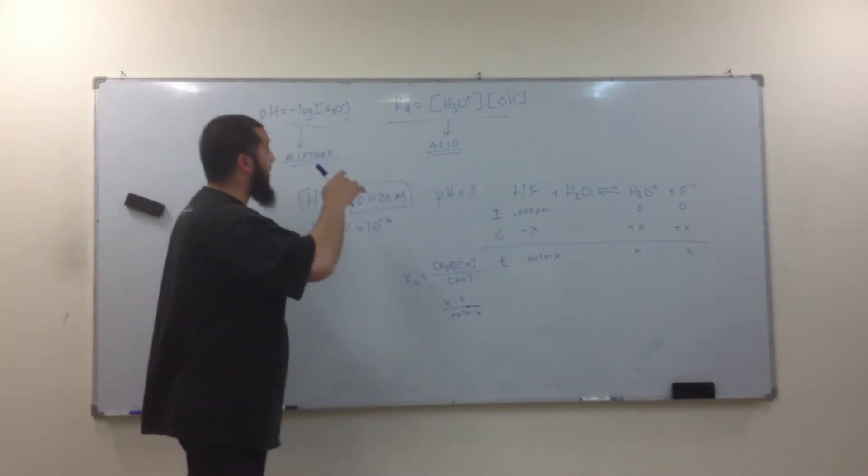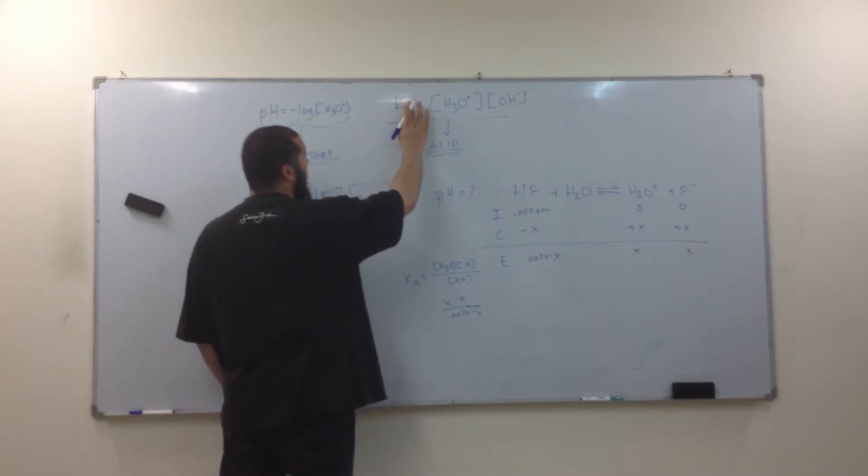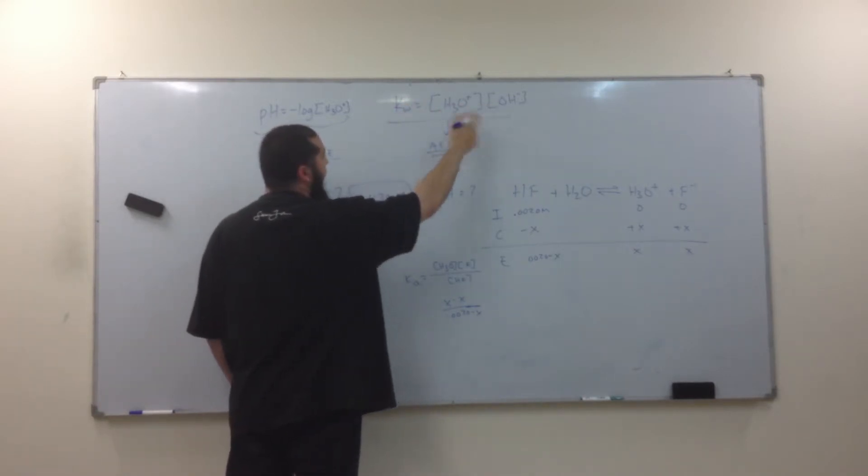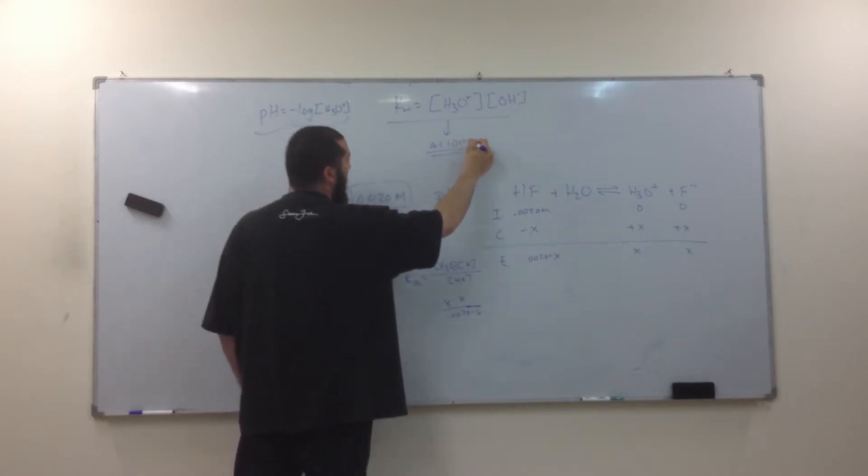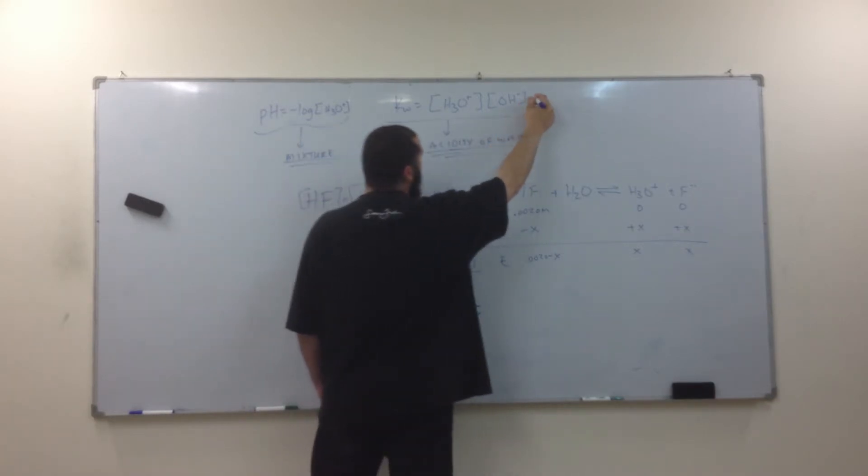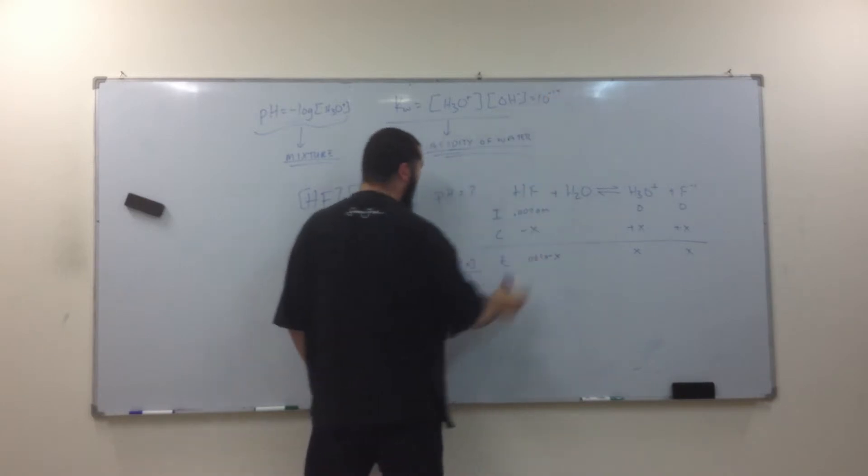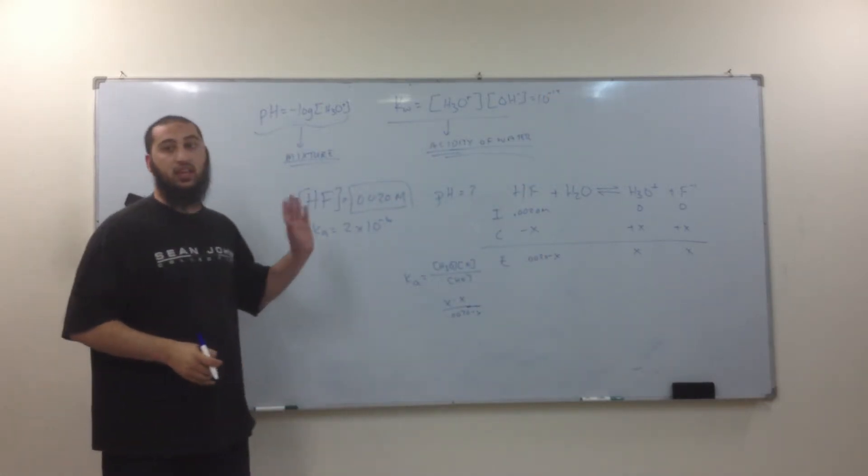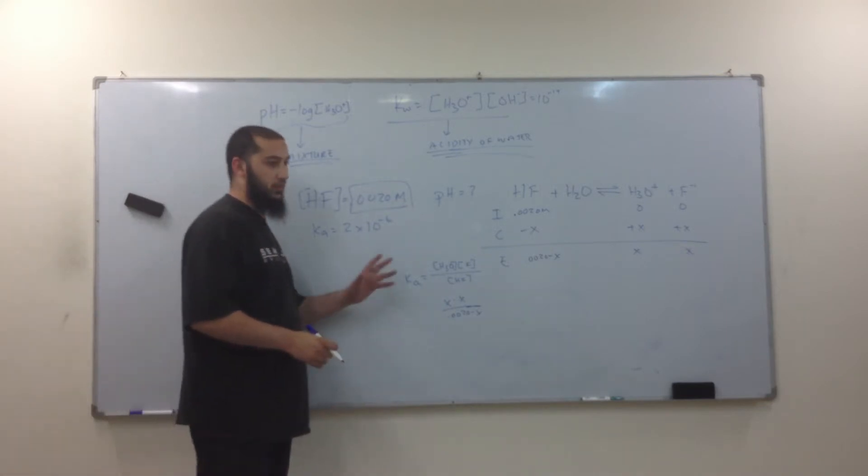I'm actually just going to make a correction. This is Ka. This right here specifically is called Kw, because it's the acidity of water. So this always equals 10 to the negative 14. But when it comes to Ka, this is the same thing as K equilibrium, but it's for an acid.